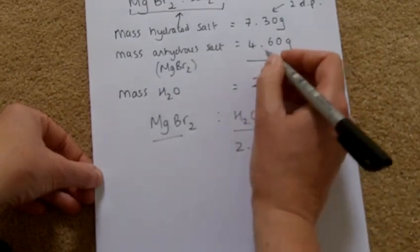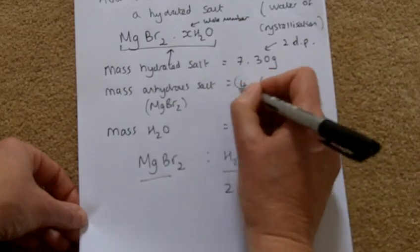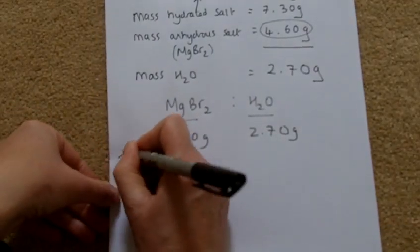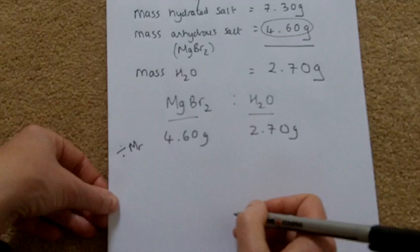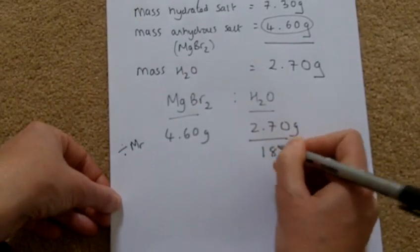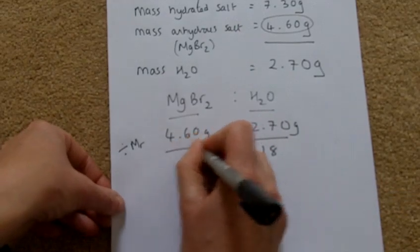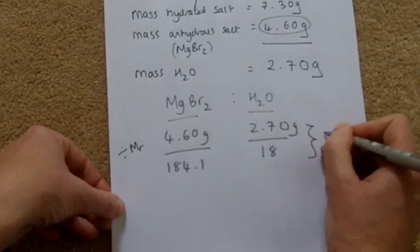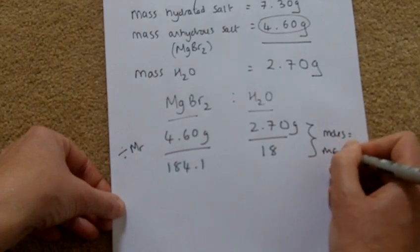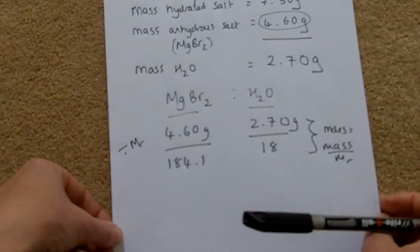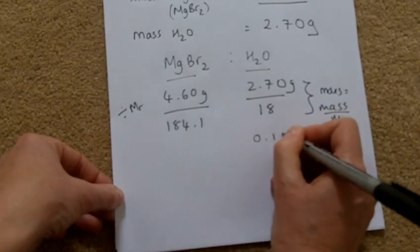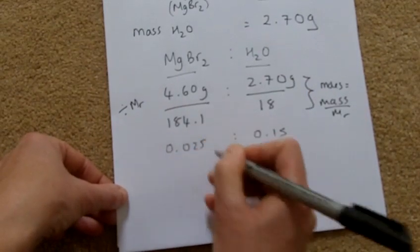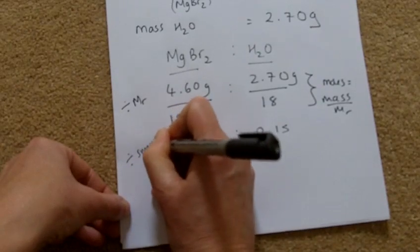The mass of the anhydrous salt is 4.60 grams. Then we divide by the Mr. The Mr of water is 18 — two hydrogens and one oxygen. The Mr of magnesium bromide is 184.1. What we're doing here is finding the moles: moles equals mass over Mr. Doing those calculations gives us 0.15 for water and 0.025 for magnesium bromide.